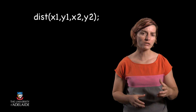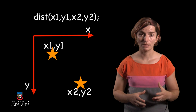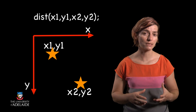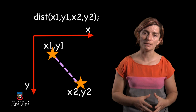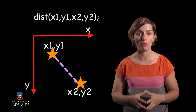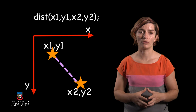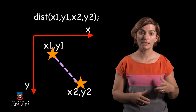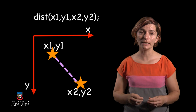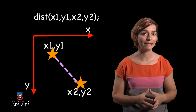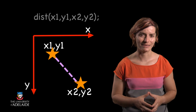The function dist, given as dist(x1, y1, x2, y2), gives us the distance between two points given by their x and y coordinates. The distance between two points is calculated using the Euclidean distance formula, like this.